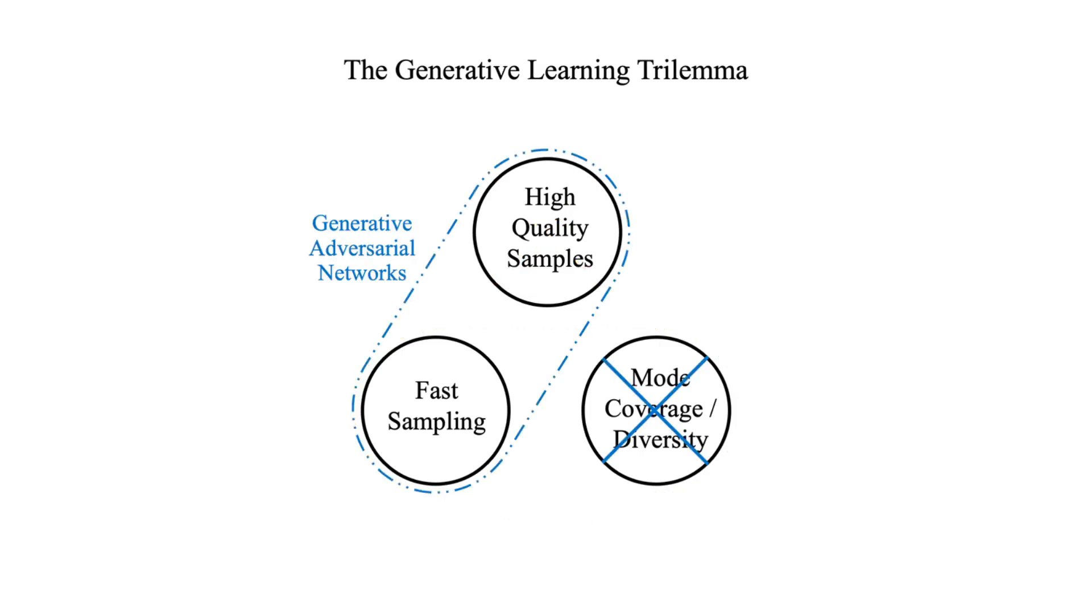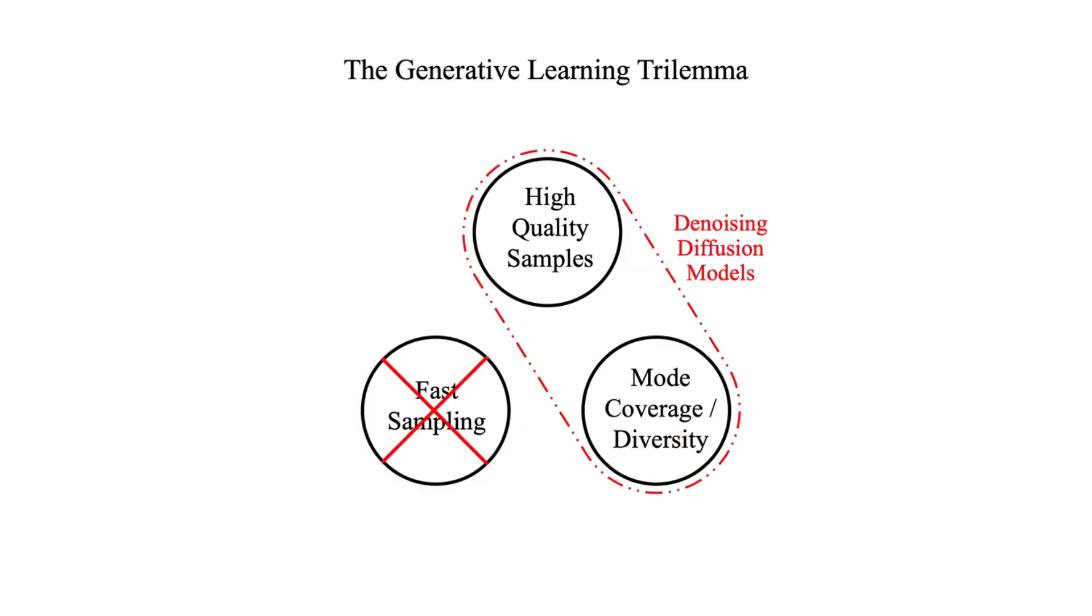Next we have generative adversarial networks, or shortly GANs. The sample quality of GANs are impressive. Despite this, they still have fast sampling because sampling means just one forward pass of the generator. However, the GANs are infamous for their mode collapse issues.